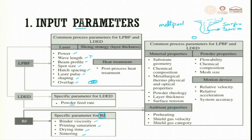Ambient properties include preheating, gas shield velocity, and shielding gas category. For powder processing: flow ability, chemical composition, and mesh size — which is directly proportional to powder size. Motion devices include relative motion, relative accelerations, and system accuracy.